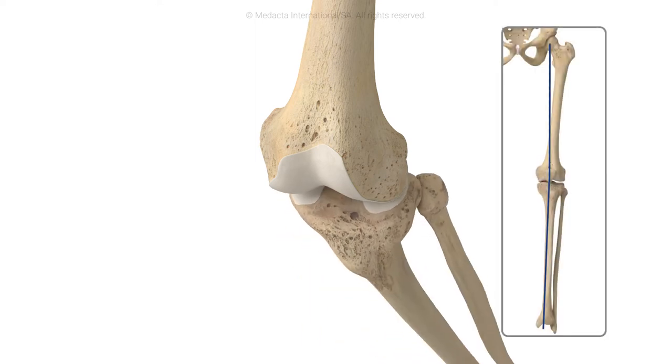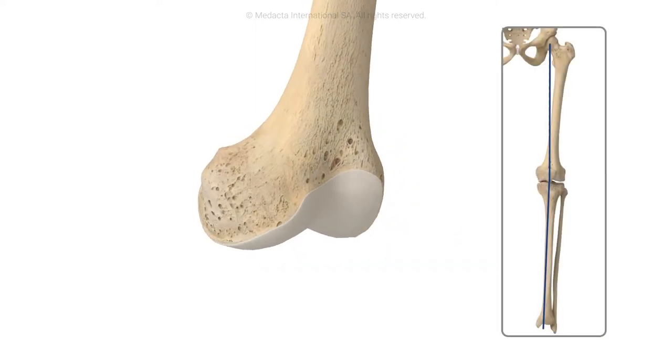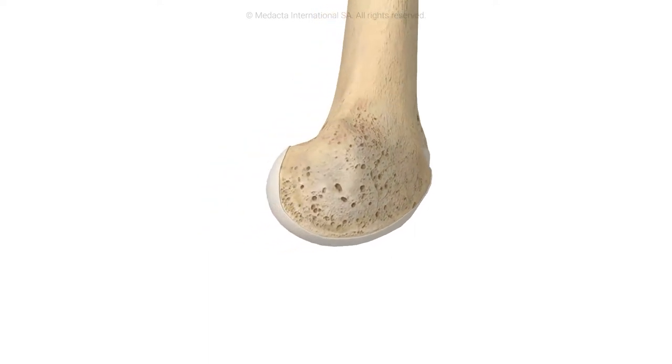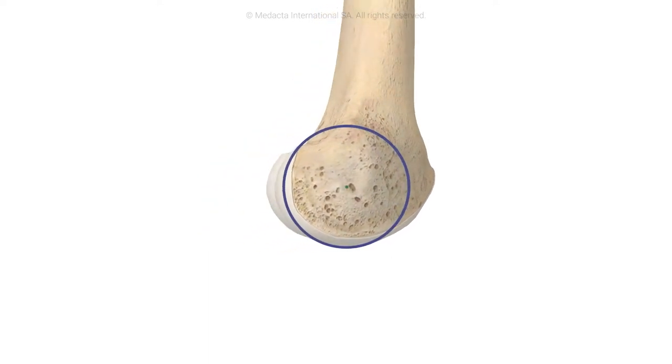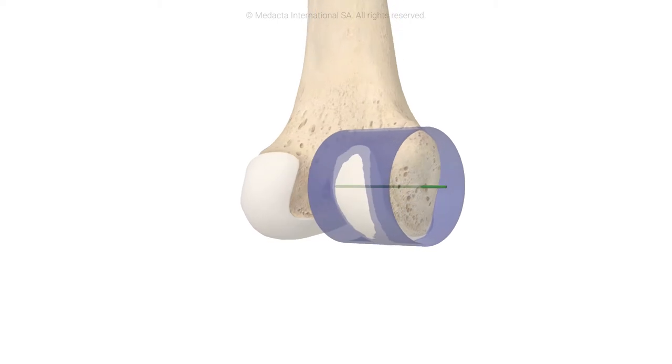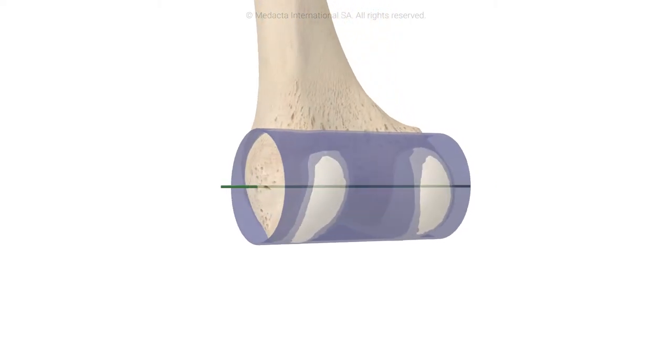Kinematic alignment originated from studies showing that the tibia moves about the femur in a flexion extension axis which corresponds to the axis of the cylinder that best fits the femoral condyles.